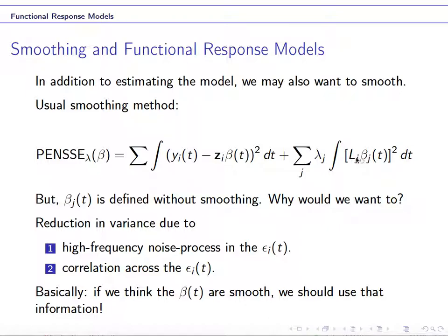So you can use any differential operator L to penalize the roughness on the beta j of t. Generally, we will use the second derivative to define this roughness penalty. But if your beta j of t is periodic, then we recommend using the harmonic acceleration operator to define this Lj here.